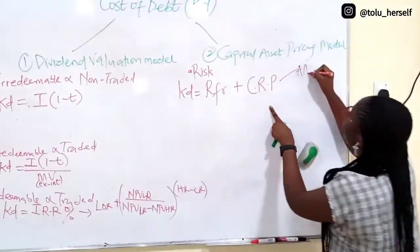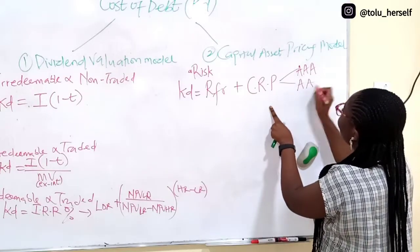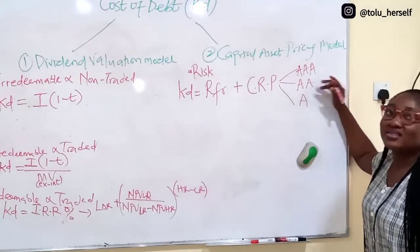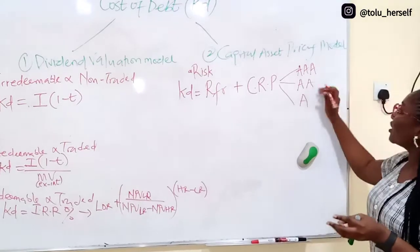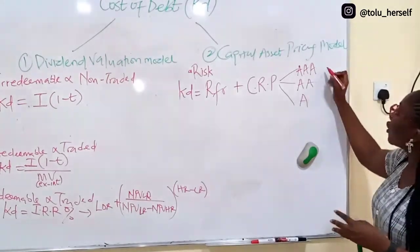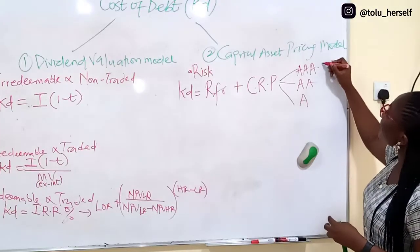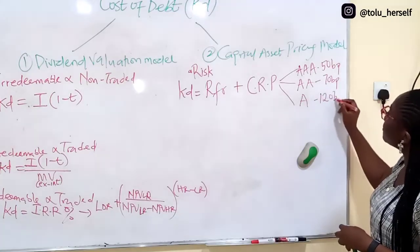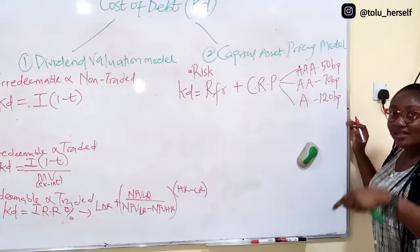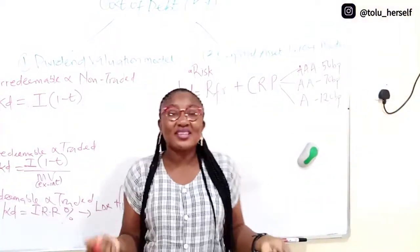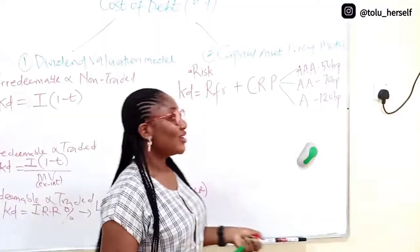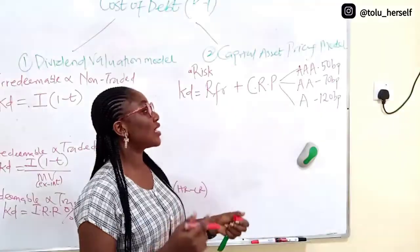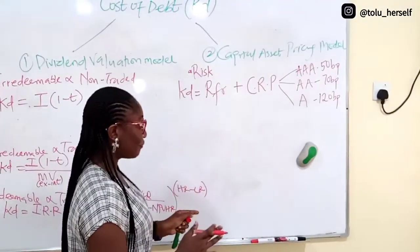This AAA means highest rating. When they give you ratings, they will always give you the basis points. They can tell you AAA is 50 basis points, AA is 70 basis points, A is 120 basis points. The higher the basis points, the lower the rating. It's like if you go to the bank and want to collect debt, the way they will rate you is not the way they will rate someone who might not pay back with interest or meet the loan agreement timely.